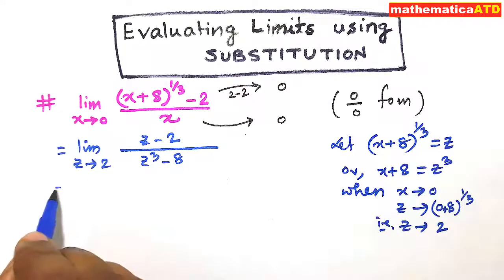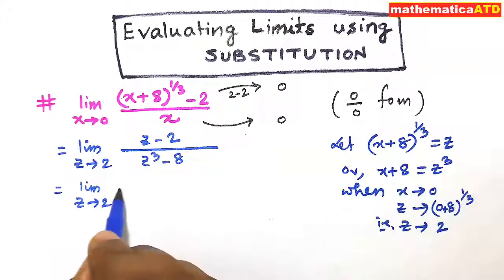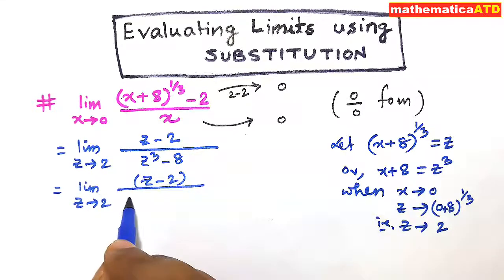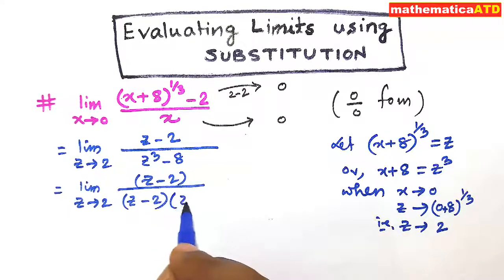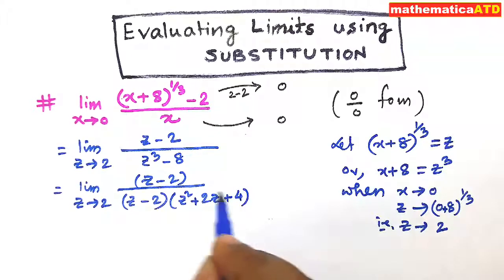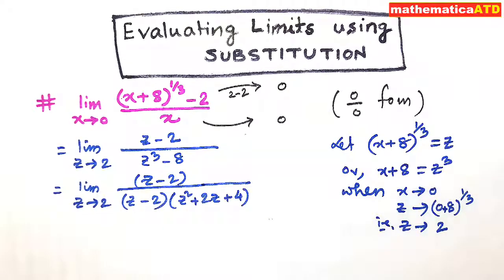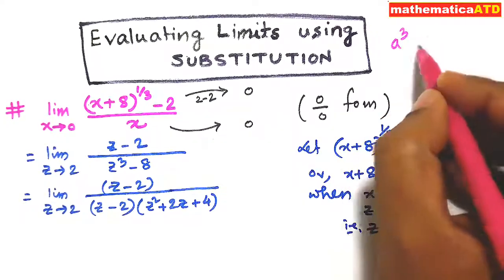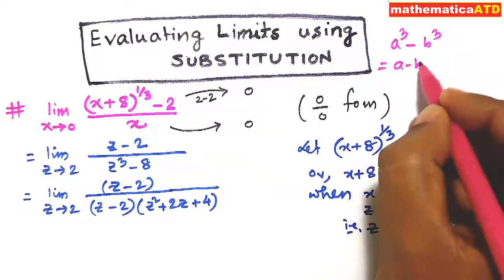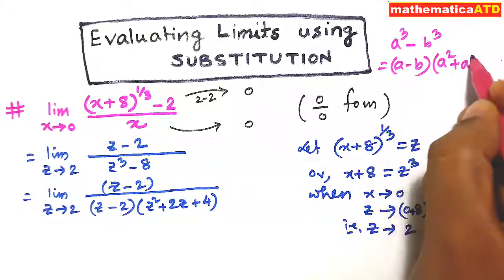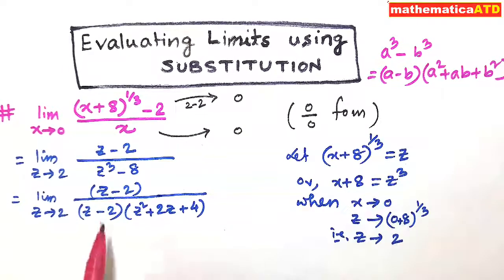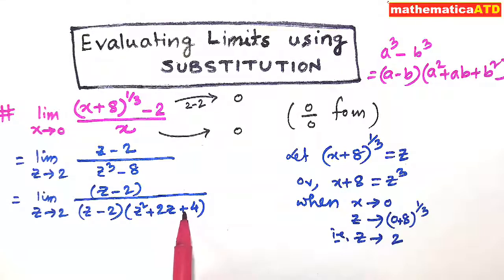So we can write limit z tends to 2, z minus 2 divided by z cube minus 8. This is z cube minus 2 cube, which can be written as z minus 2 whole into z square plus 2z plus 4, because we have applied the formula: a cube minus b cube equals a minus b whole into a square plus ab plus b square. So z cube minus 2 cube equals z minus 2 whole into z square plus 2 into z plus 2 square, and 2 square means 4.